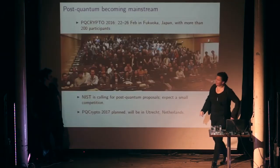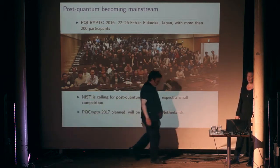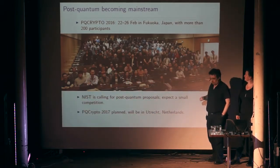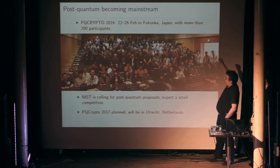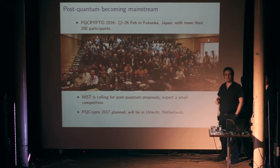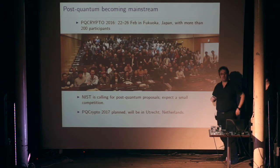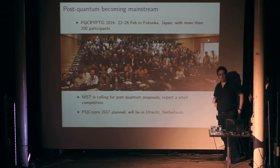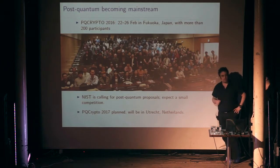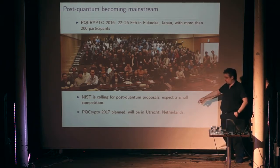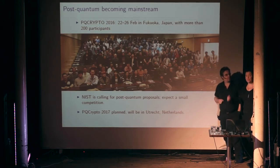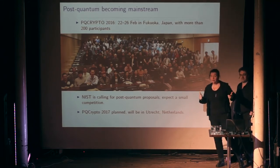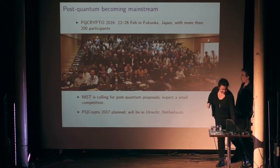In February 2016, researchers gathered at the Post-Quantum Cryptography conference in Fukuoka. There, NIST — the US National Institute of Standards and Technology, which standardized AES via a competition — announced they'd like submissions of possible post-quantum standards, then spend years working it out. Submissions are planned for next year. The next conference, PQ Crypto 2017, will be held in Utrecht, Netherlands, with a full week of summer school as well.